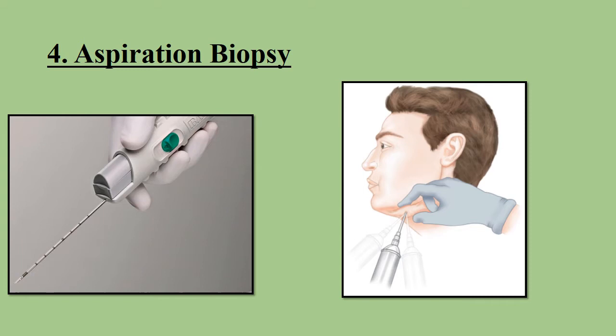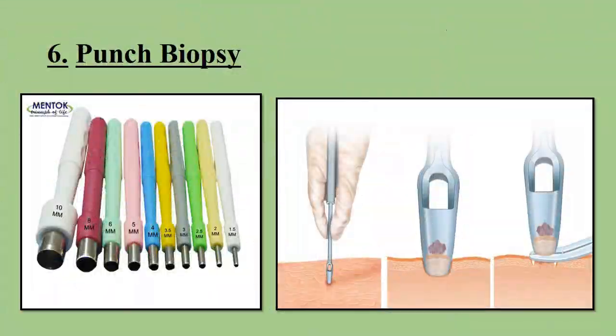We also have core needle aspiration, which is similar to fine needle aspiration but with a larger gauge needle, allowing more tissue to be obtained. Core needle aspiration is not commonly used in head and neck biopsy — it is more used in breast biopsy. We also have punch biopsy, used for taking a small part of mucosal lesions or lesions in inaccessible regions.